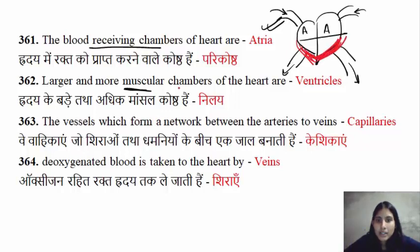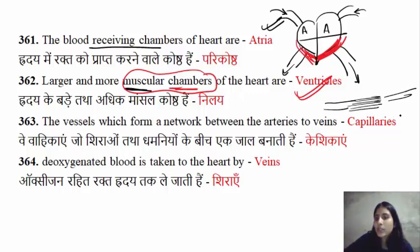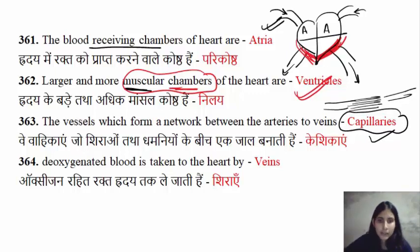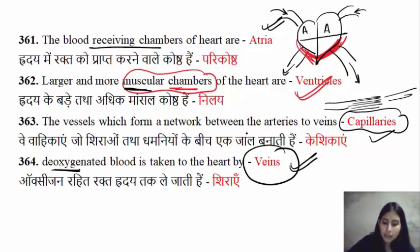The most muscular chambers in the heart are the ventricles. Arteries and veins are connected by small vessels called capillaries. Veins carry de-oxygenated blood, while arteries carry oxygenated blood.